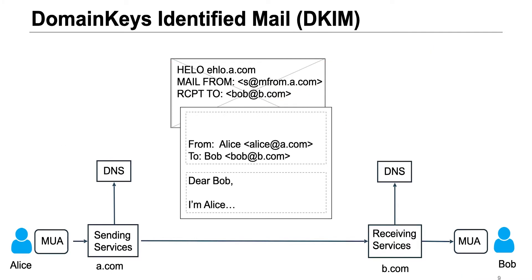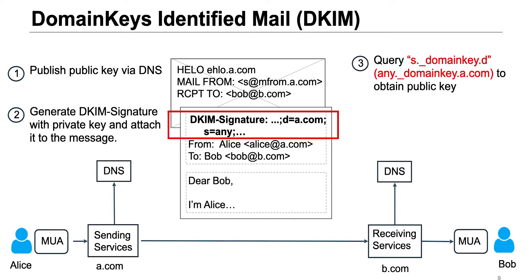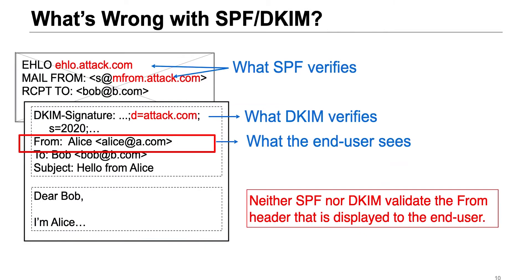DKIM uses public key cryptography to authenticate the sender. It works in four steps. First, the sending service publishes a public key in a DNS record. Then when sending an email, it signs the message with the corresponding private key to generate the DKIM signature header and attaches it to the message. When receiving the email, the receiving service queries s.domainkey.d to obtain the public key, where s and d are extracted from the DKIM signature header and 'domainkey' is a constant. Then the receiving service validates the DKIM signature with the obtained public key. If the signature is valid, the email passes DKIM authentication. So DKIM ensures that only the person who holds the private key can send email for that domain.